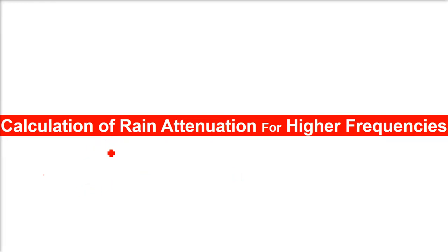Calculation of rain attenuation for higher frequencies. When we go to high frequencies, there is significant attenuation because of rain. Whenever we are talking about some satellite link, communication link, or wireless communication, we need to think about rain attenuation at higher frequencies.